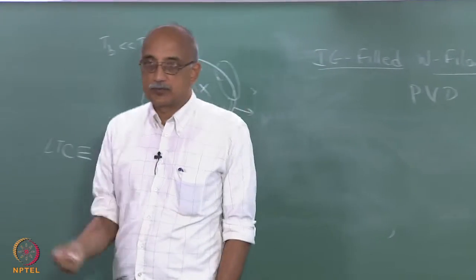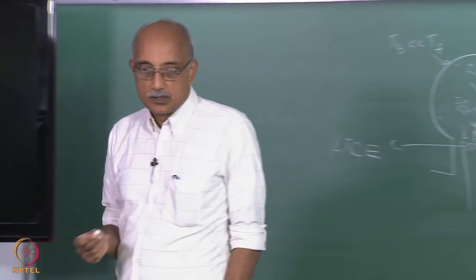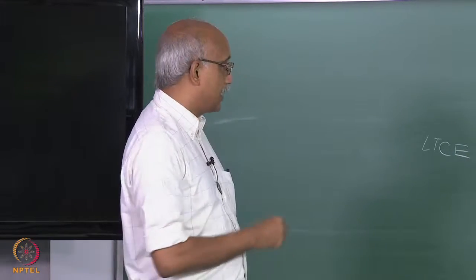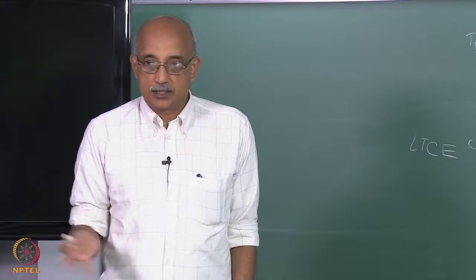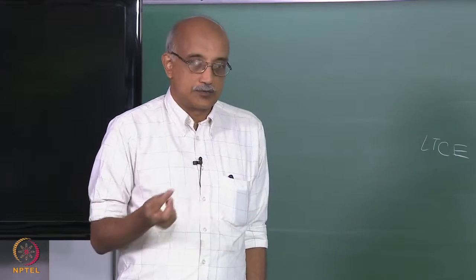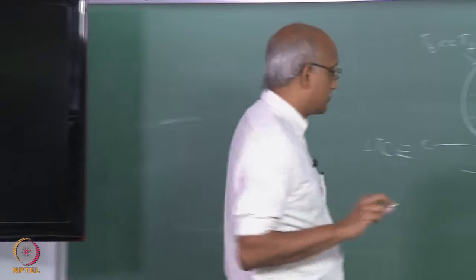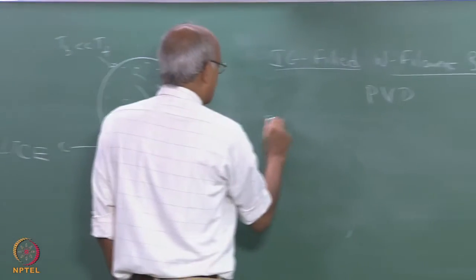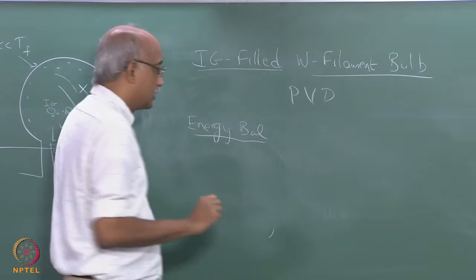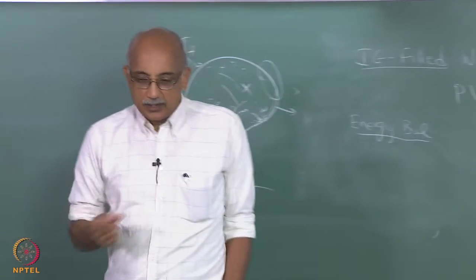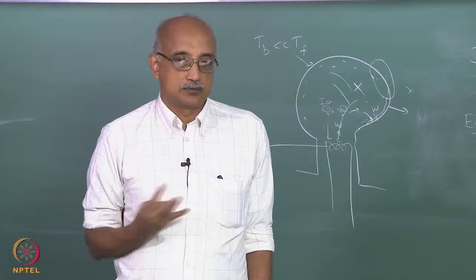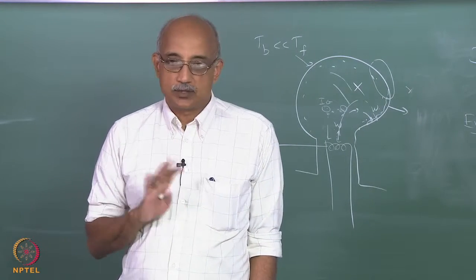The tungsten that evaporates from the filament stays as tungsten — it goes from being solid phase tungsten to being gas phase tungsten, and then at the walls of the bulb it re-deposits as solid phase tungsten. How would you do the transport analysis of this type of problem? First you have to write the energy balance. In a typical conservation equation for mass, momentum, energy, or entropy, there are four terms: accumulation, inflow, outflow, and generation.